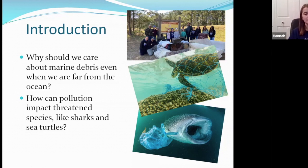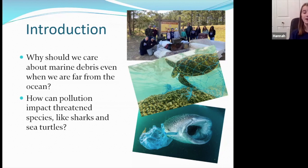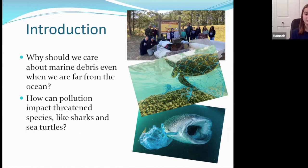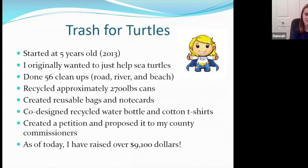How can pollution impact certain species like sharks and sea turtles? I have a couple of pictures and examples. There's a hawksbill sea turtle that has plastic wrapped around it in a fishing net — it's not able to breathe, which can really hurt and kill sea turtles. And for example, whale sharks are filter feeders, so they might ingest plastic. That plastic goes into their stomachs and can make them starve because their stomachs are full of plastic, which is really bad. So we want to make sure our pollution doesn't reach them.